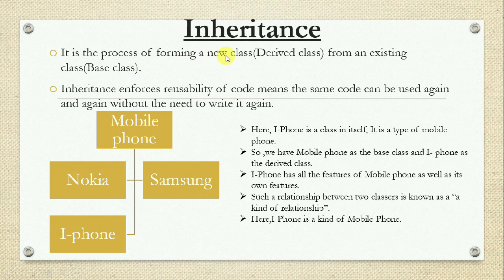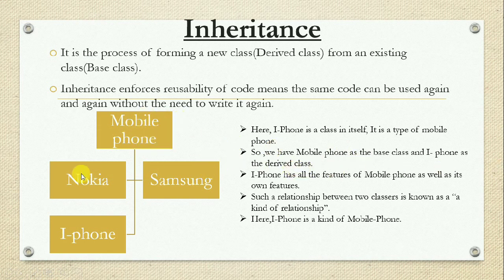Inheritance is the process of forming a new class. The new class is the derived class, which is formed from an existing class called the base class. Inheritance enforces reusability of code, meaning the same code can be used again without rewriting it. For example, with mobile phone as the base class, iPhone is a derived class — it has all the features of mobile phone as well as its own features. Such a relationship is known as a 'kind of' relationship: iPhone is a kind of mobile phone, like a parent-child relationship.